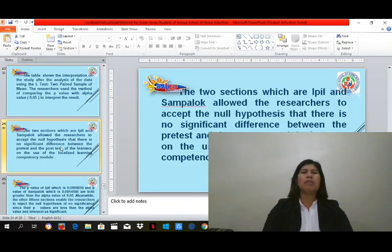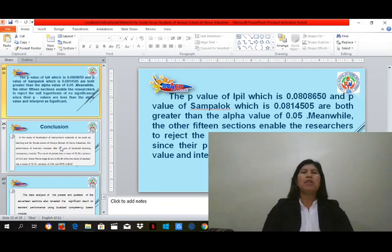The two sections, which are EPL and Sampaloc, allow the researchers to accept the null hypothesis that there is no significant difference between the pre-test and post-test of the learners on the use of the localized learning competency module. The p-value of EPL, which is 0.0808650, and p-value of Sampaloc, which is 0.0814505, are both greater than the alpha value of 0.05. Meanwhile, the other 15 sections enable the researchers to reject the null hypothesis of no significance since their p-values are less than the alpha value and interpret as significant.